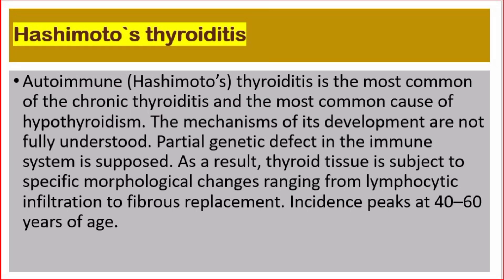Autoimmune Hashimoto's thyroiditis is the most common of the chronic thyroiditis and the most common cause of hypothyroidism. The mechanisms of its development are not fully understood. A partial genetic defect in the immune system is supposed, and as a result, thyroid tissue is subject to specific morphological changes ranging from lymphocytic infiltration to fibrous replacement.